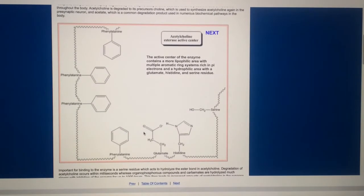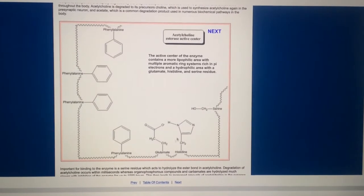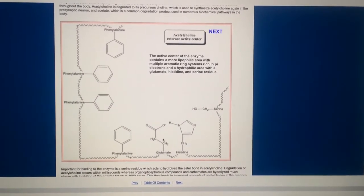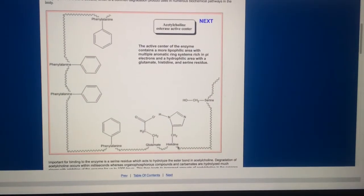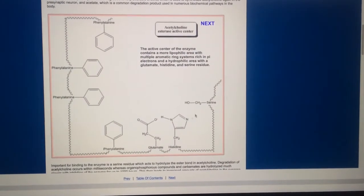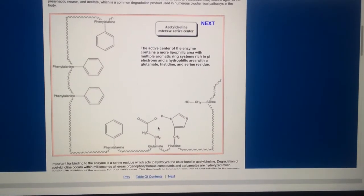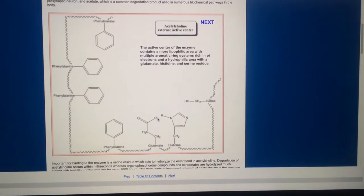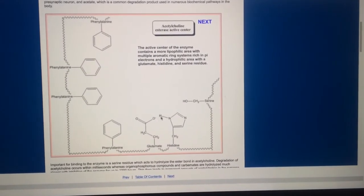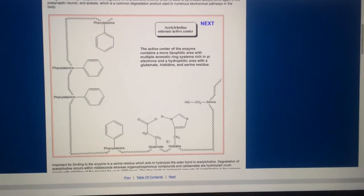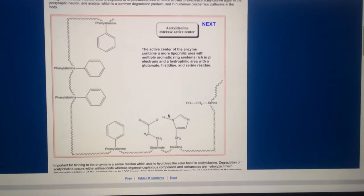And then down here, this is a more hydrophilic area, and you can see that I have a glutamate here. I have a histidine, which is an amino acid, and I have serine here. These are all residues, and you can see that I have a charge here and hydrogen here with electron. So this area is more polar, so it's going to be more hydrophilic.